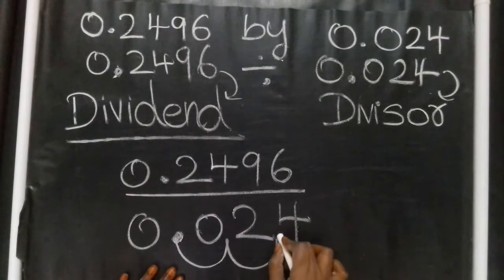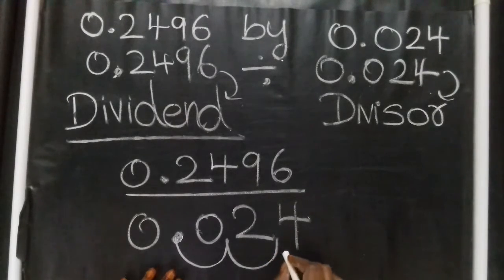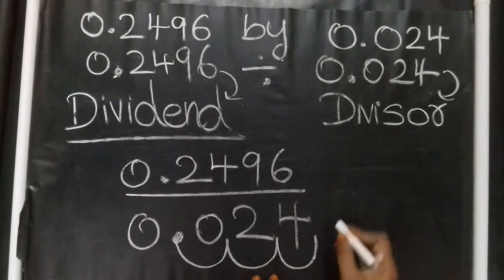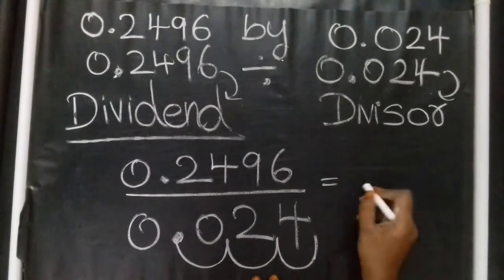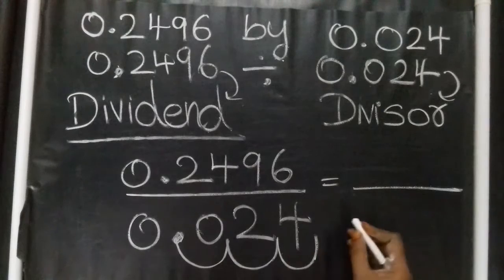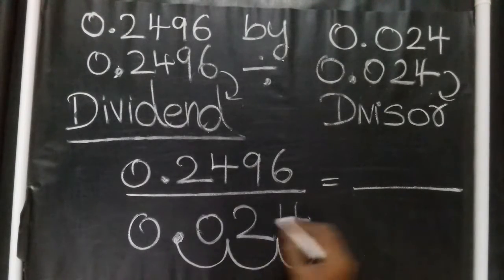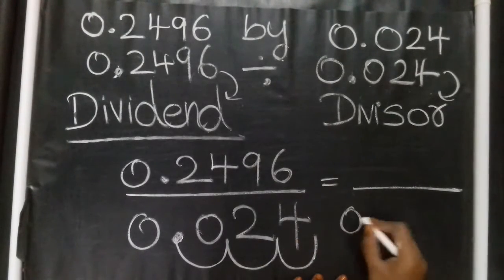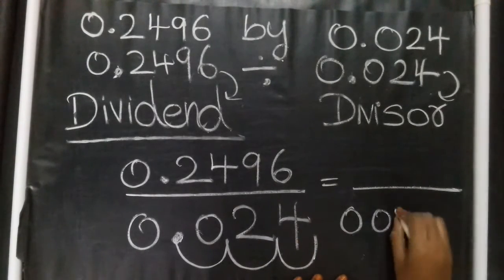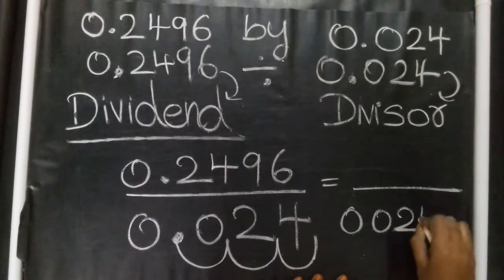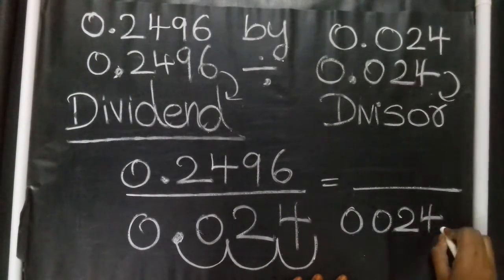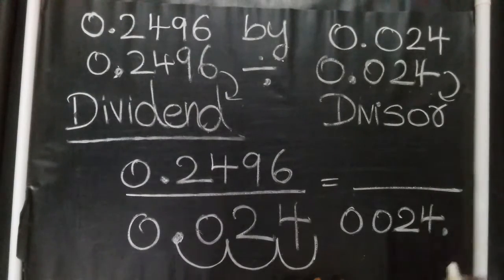First step, second step, third step. Two points are here. So the decimal point is here: zero, zero, two, four. The point is here. We need to count how many steps the decimal point must move in the divisor 0.024.